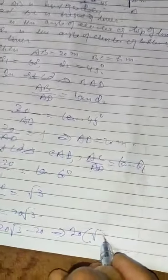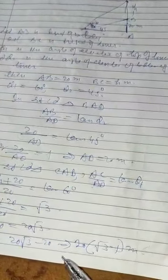So the height of the tower which is fixed on the building is 20 times root 3 minus 1 meters. Thanks for today.